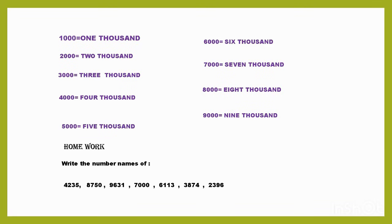And children, this is your assignment. You have to write the number names. You have to read at home. You can write different 4-digit numbers and read and write the spellings of the given numbers: 4,235; 8,750; 9,631; 7,000; 6,113; 3,874; 2,396.